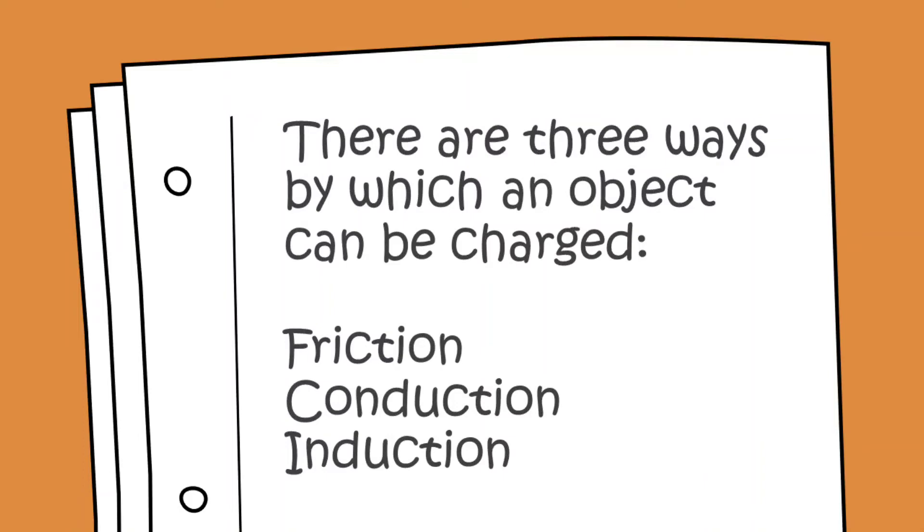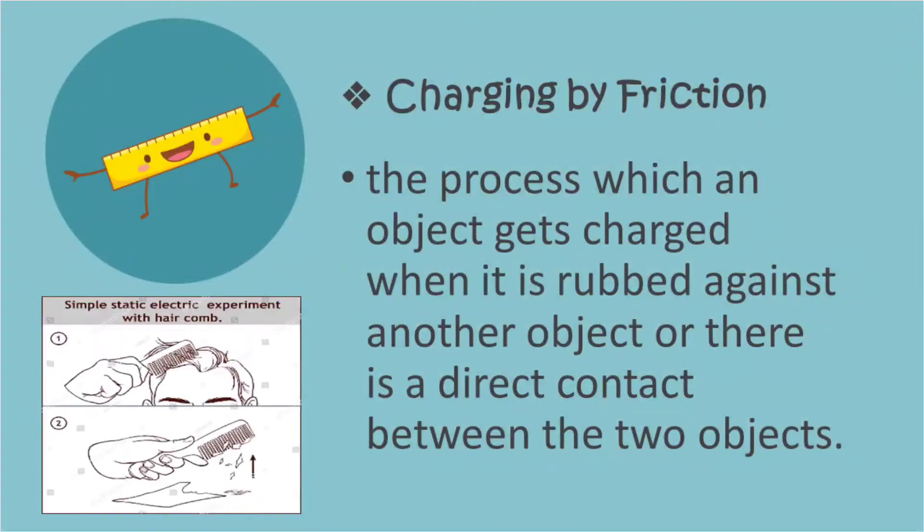The process of supplying electric charge to an object or losing the electric charge from an object is called charging. An uncharged object can be charged in different ways. The first process is the charging by friction, the process which an object gets charged when it is rubbed against another object or there is a direct contact between the two objects.